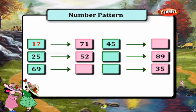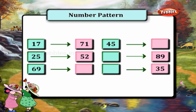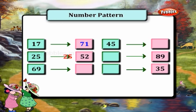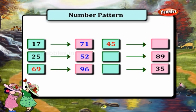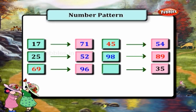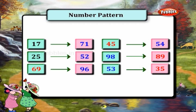Observe each number pattern and complete it. 17, 71, 25, 52 — in this pattern the digits of the numbers are interchanged. 17 becomes 71, 25 becomes 52. Following the same pattern: 69 becomes 96, 45 becomes 54, 89 becomes 98, 35 becomes 53. This is a reversal pattern.